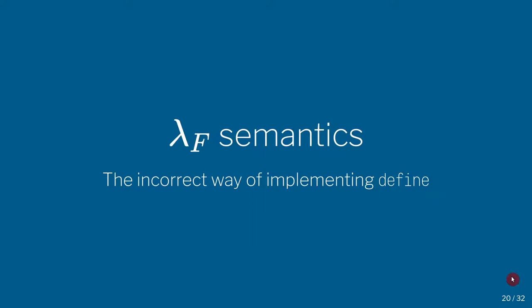We now implement the behavior of lambda F, the semantics, which is another way of saying we're going to define the evaluation function. This is going to be an incorrect way of implementing define, and by this I mean incorrect in the sense that it doesn't follow Racket, it's still a valid way of doing it.